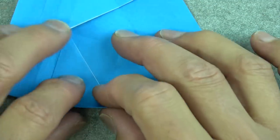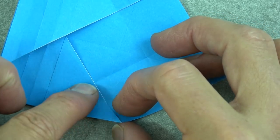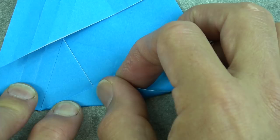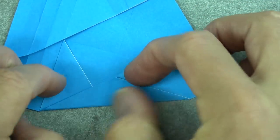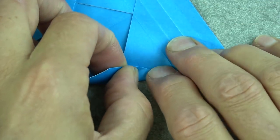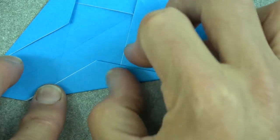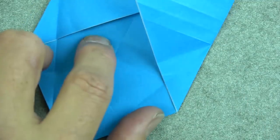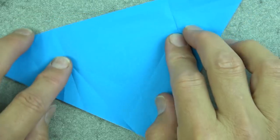And now fold this flap up so that this edge aligns with this crease. Like that. And repeat on this side.